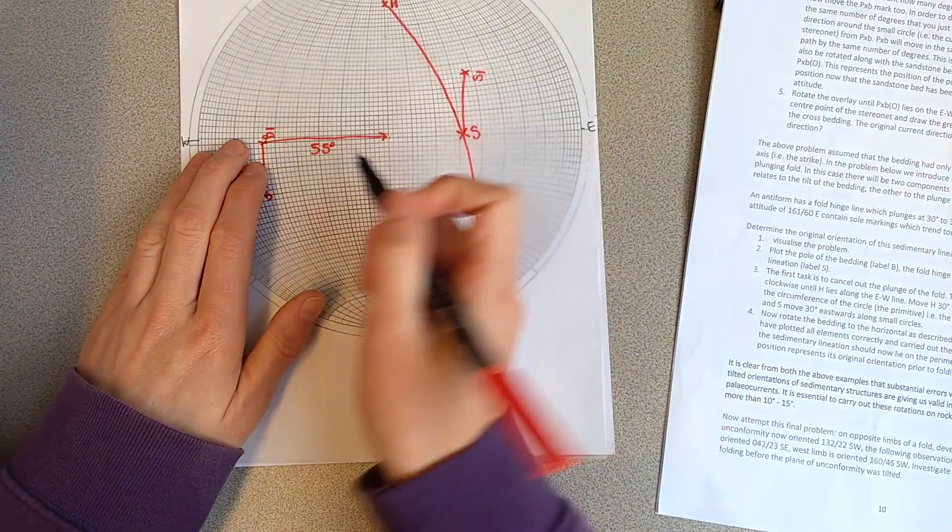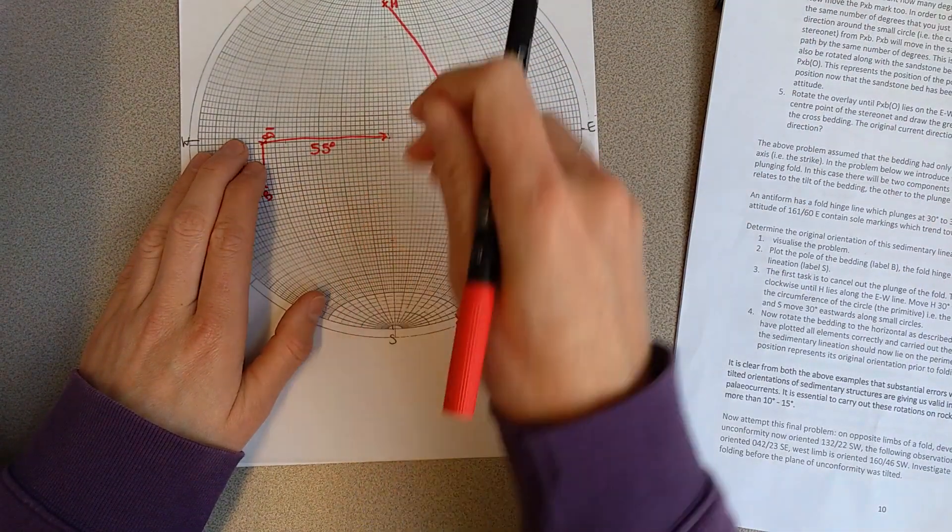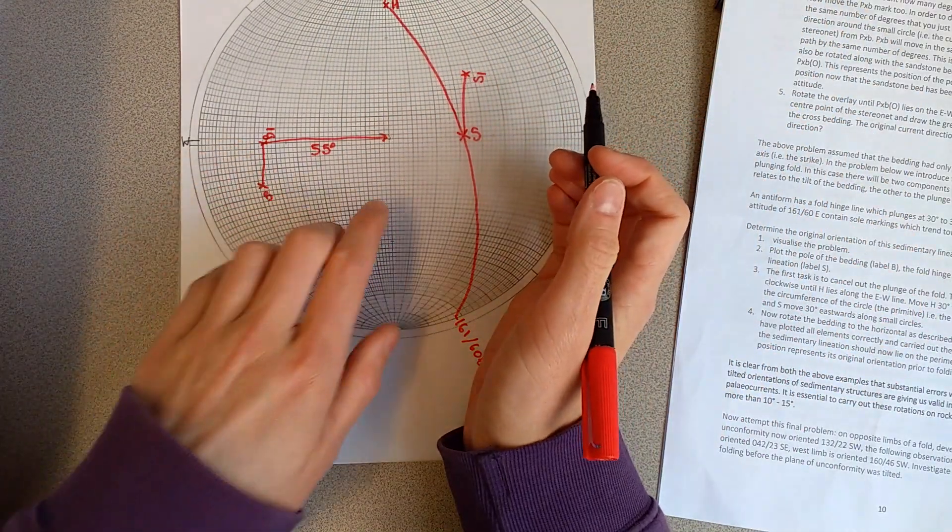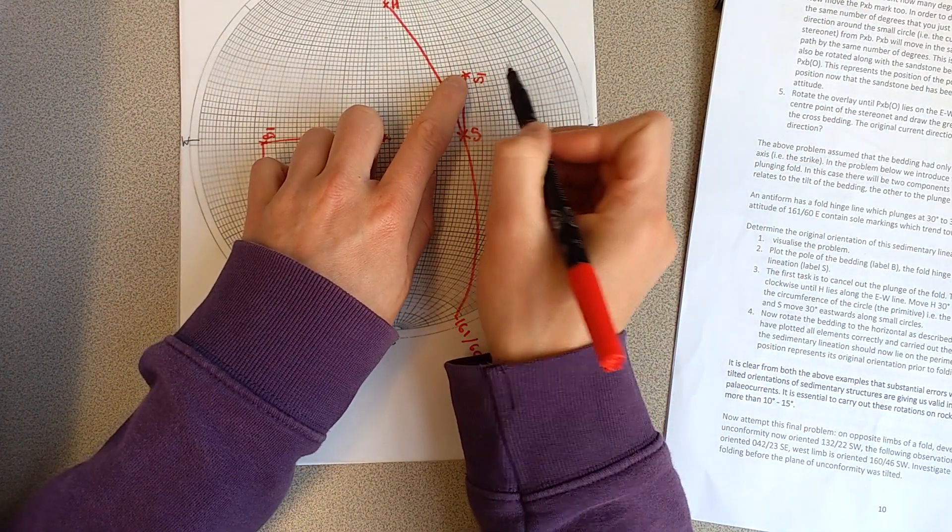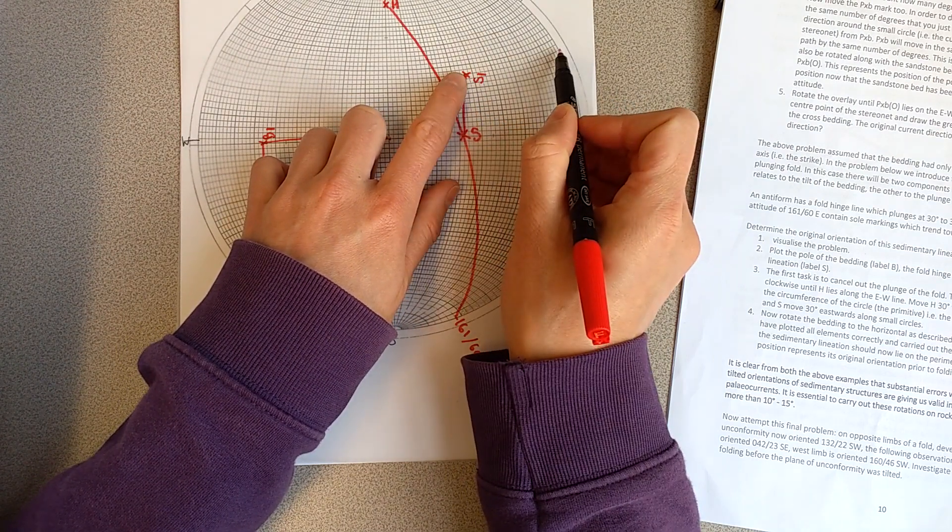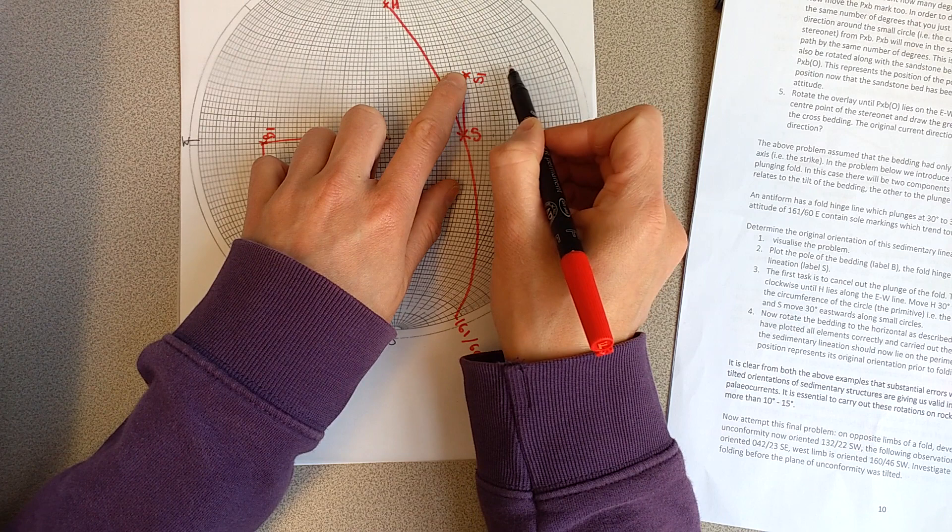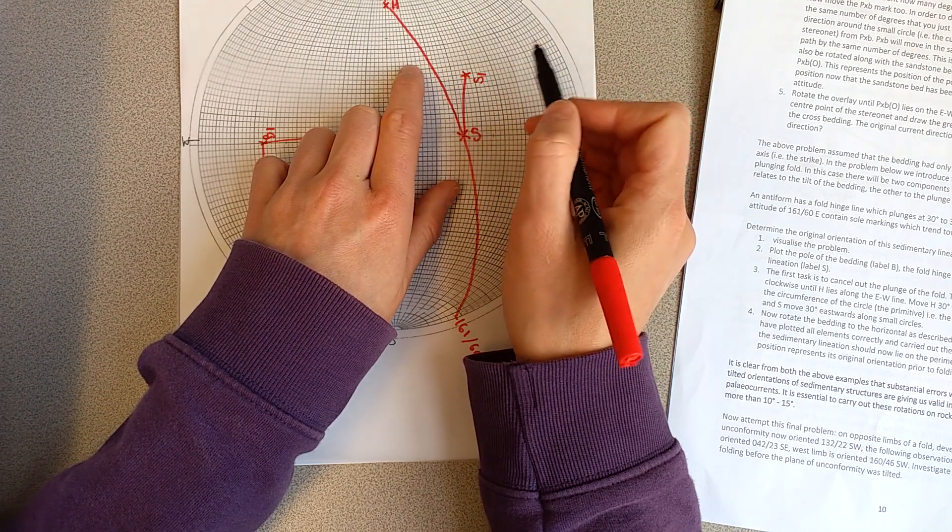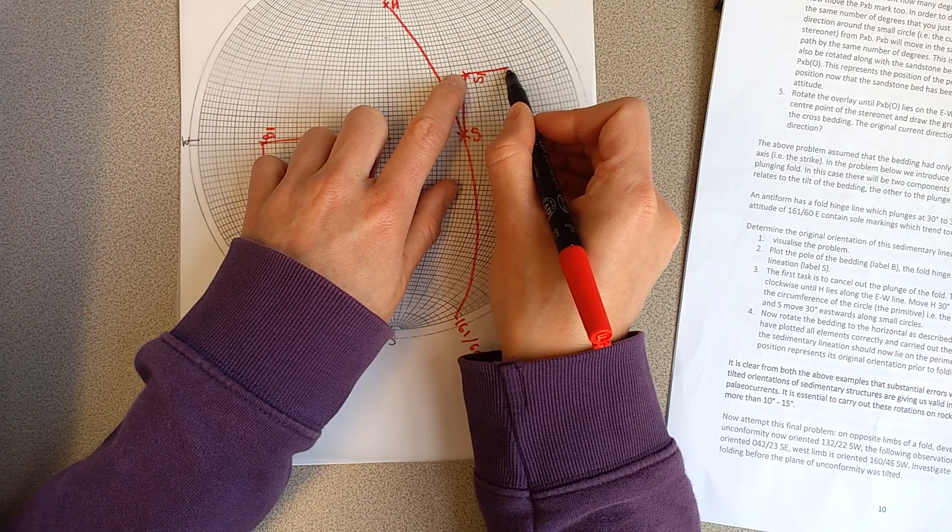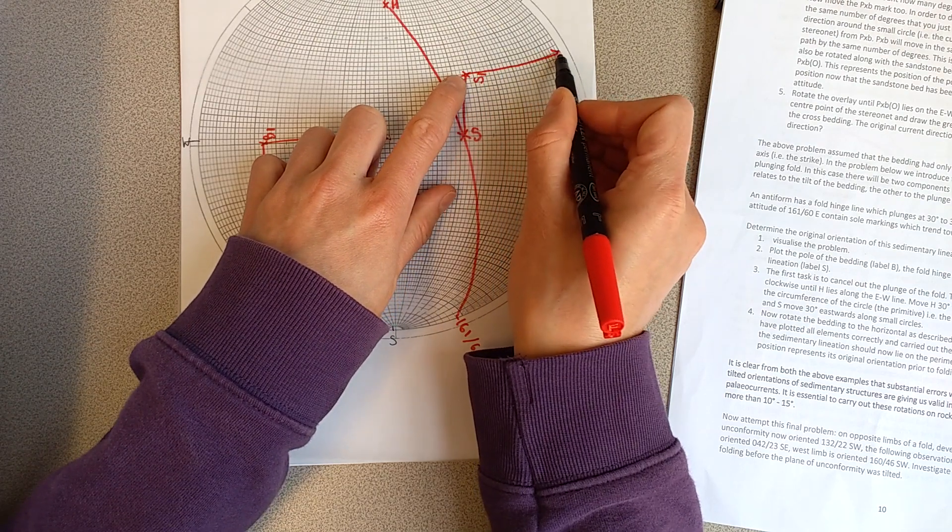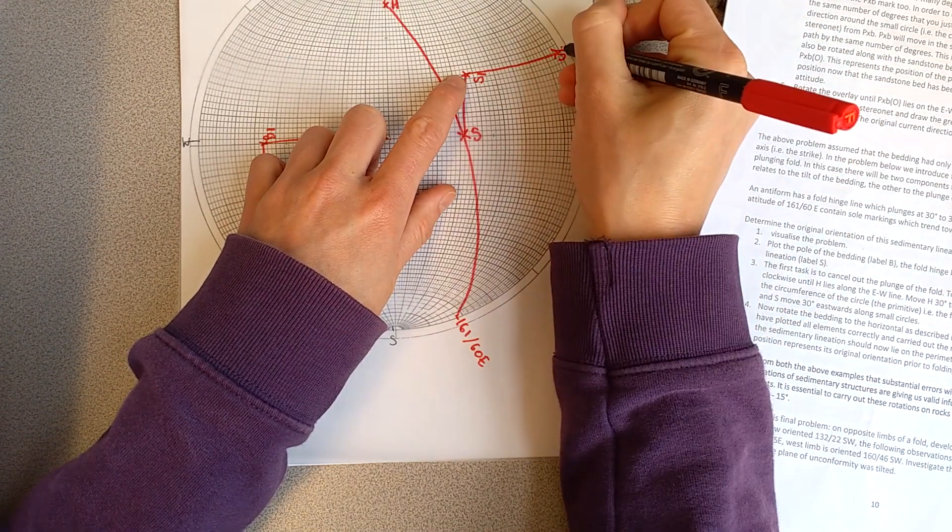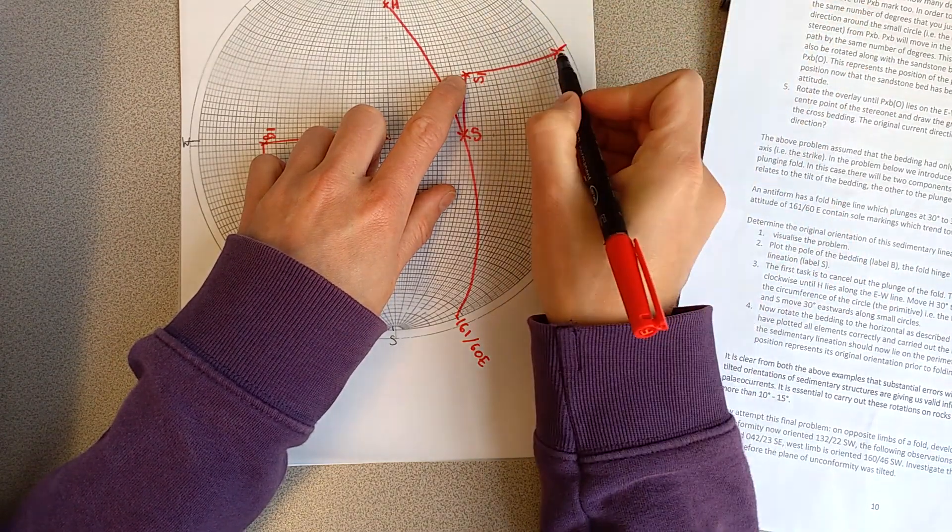So when we restore our bedding to horizontal, we don't need to restore our hinge because the hinge won't exist once we've unfolded the rocks, but we do need to restore these sole marks. And this, if all being well, it should be 10, 20, 30, 40, 50, 55. It should be, if we move our sole marks 55 degrees in the same direction, it brings them to the edge of the circle. And we want to look at that point there.